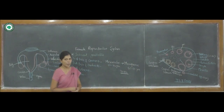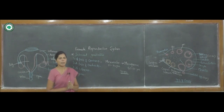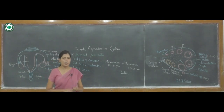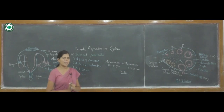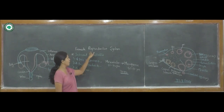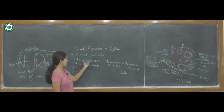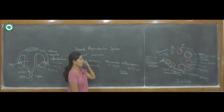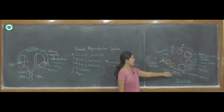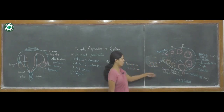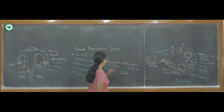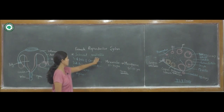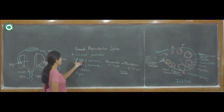The ovary is the female primary sex organ — the female gonad. The function of the female gonad is production and development of the female gamete, or gametogenesis. In the female reproductive system, the female gonad is the ovary, and the process of gametogenesis — that is, oogenesis — is carried out in the ovary. It is the primary sex organ present in a pair.